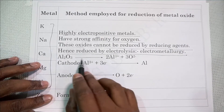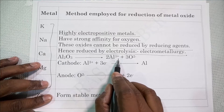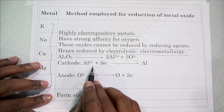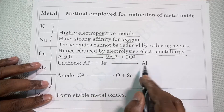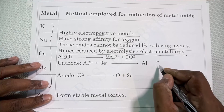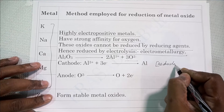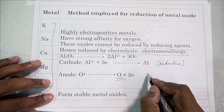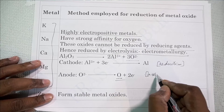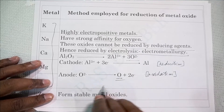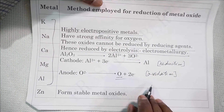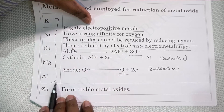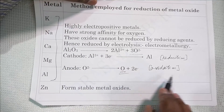For example, aluminium oxide Al₂O₃ splits into Al³⁺ ions and O²⁻ ions. At the cathode, the aluminium ion changes to aluminium — this is a gain of electrons, that is a reduction reaction. At the anode, oxygen forms neutral oxygen, which is oxidation because it is losing electrons. This is the application of electrolysis on the reduction of metal oxide. Highly electropositive metals are reduced by electrolysis.